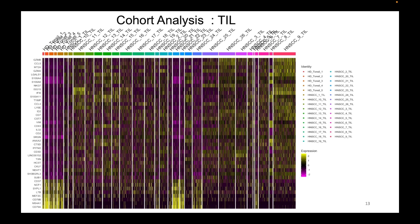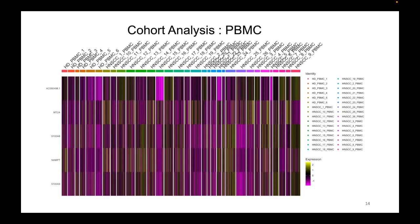The current heatmap shown compares gene expression levels between healthy and disease samples in tumor infiltrating cells. This next slide shows the heatmap for disease versus healthy for cells from the PBMC.